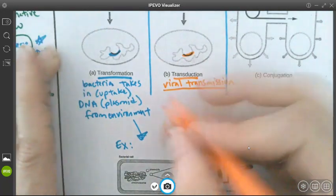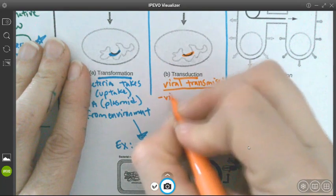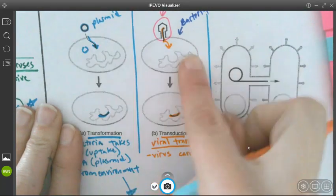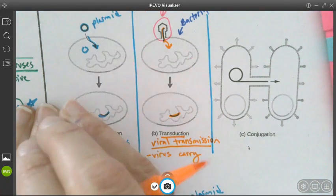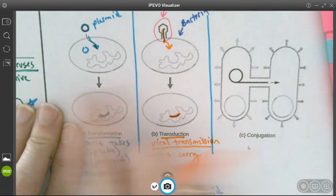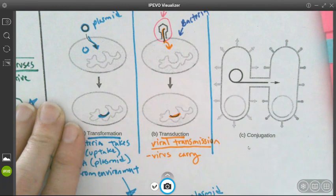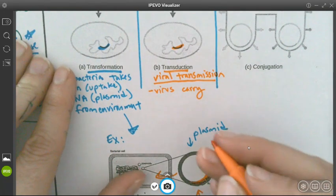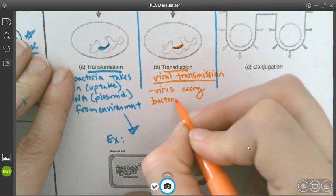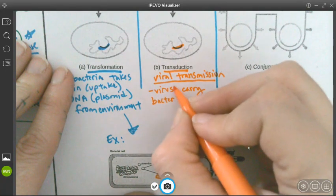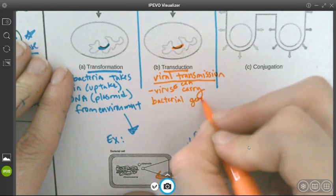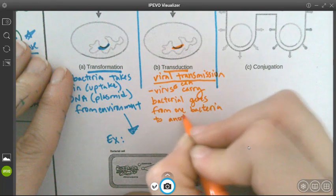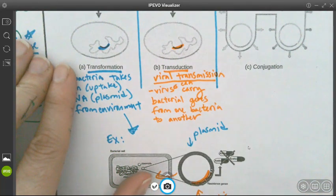So viral transmission, the virus can carry, and it can carry its own genetic information, but sometimes when a virus infects one bacteria and then goes to infect another bacteria, it's accidentally scooped up some bacterial genes as well. So the virus can actually carry bacterial genes from one bacteria to another bacteria along with its own genetic information. So transduction is what we're really talking about there is the virus carrying bacterial genes. Viruses can carry bacterial genes from one bacteria to another. Which is always really, really interesting.